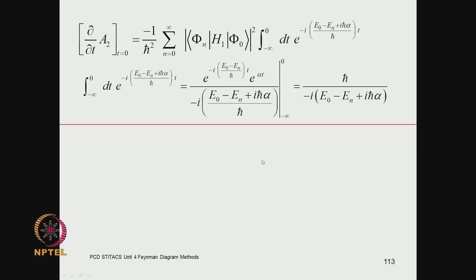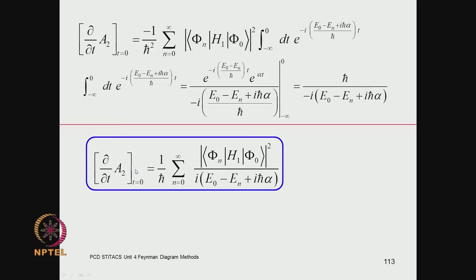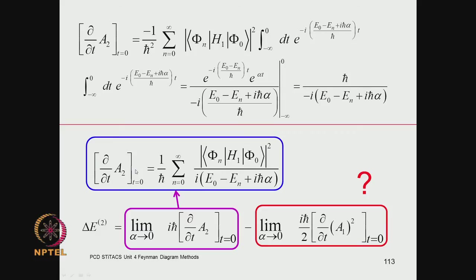This was the result from last time, and we had this time integral. The time integral is a simple exponential function — you evaluate it, divide by the exponent multiplying time, then take the difference at the upper limit 0 and the lower limit minus infinity. That term goes to 0 and this is what you get. This result is good, and we still have to determine the second term. We got as far as the first term in the previous class; this is the term we now have to discuss today.